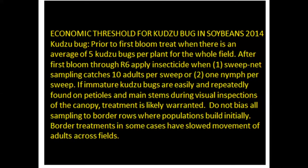The economic threshold for kudzu bug: prior to first bloom, treat when there is an average of five kudzu bugs per plant for the whole field. After first bloom through R6, apply insecticide when the sweep net catches ten adults per sweep or you have one or more nymphs per sweep.